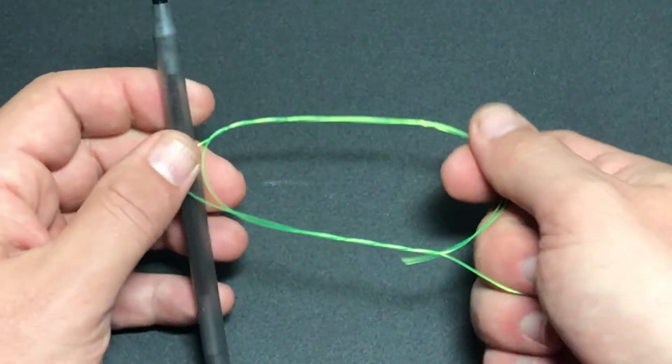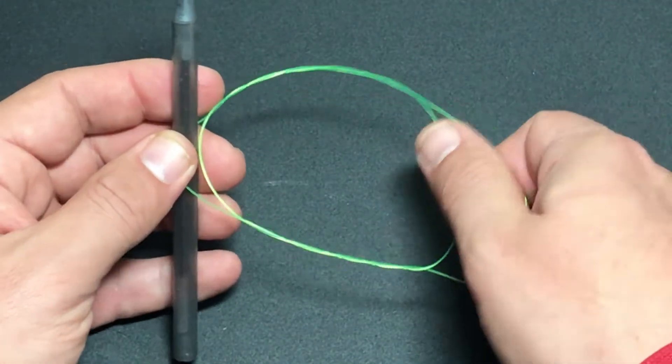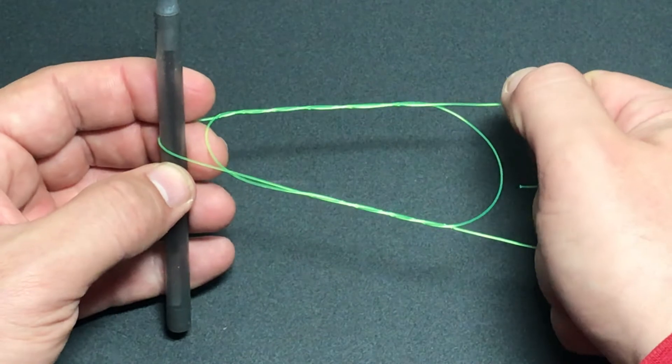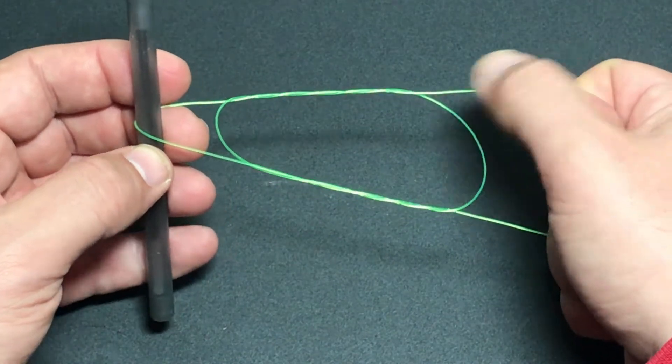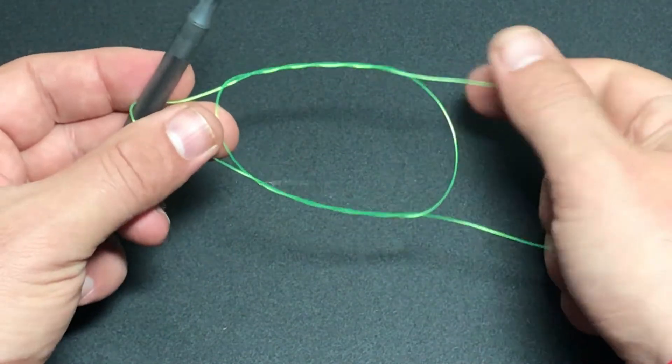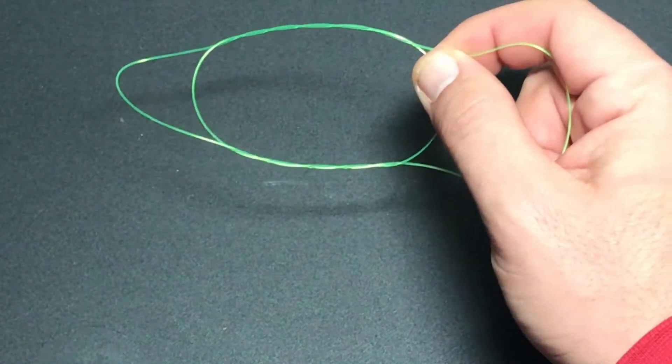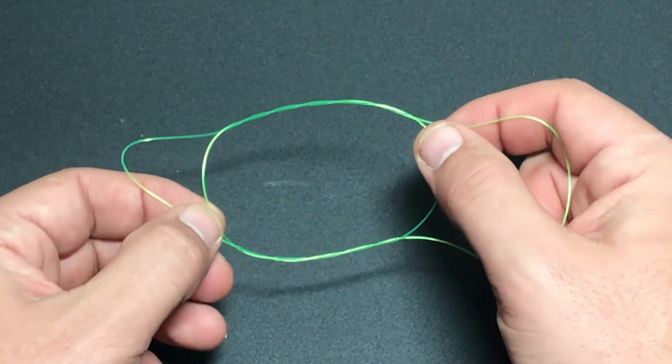And what this pin is going to do, it's going to create a hole at the bottom of this loop. So I'm going to pull against the pin and the tag ends and create a bigger hole at the bottom of this loop like this. It's going to make this next step a little easier.